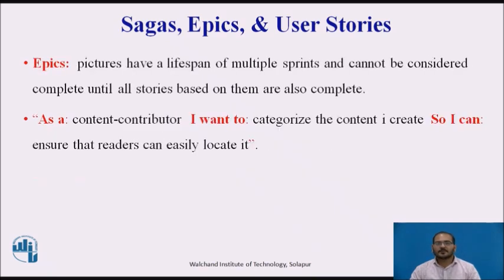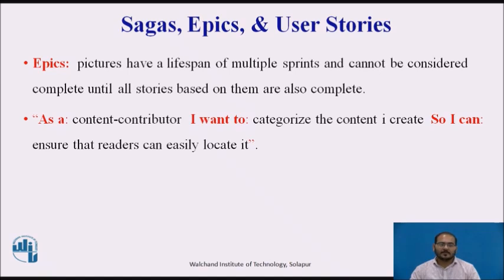The next type of story is an epic. Like a saga, epics have a lifespan of multiple sprints and cannot be considered complete until all stories based on them are also complete. However, epics have a narrower focus than a saga and, although still broad in nature, they can be completed within a few sprints. For example: as a content contributor, I want to categorize the content I create so I can ensure that readers can easily locate it. This requirement will result in multiple stories defining how content categories are defined and maintained, how they are associated with content, and how search functions utilize them.